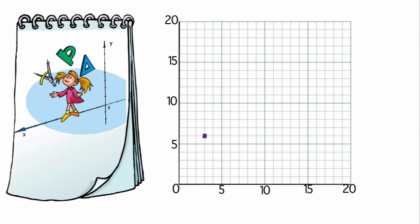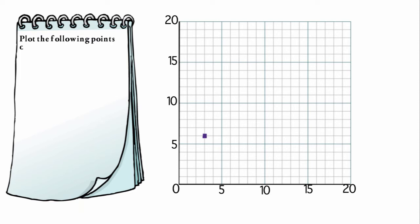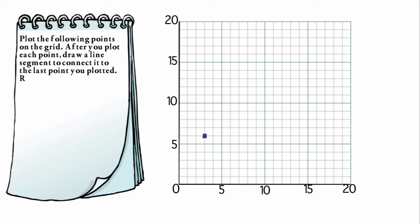Can you help me with this problem? For this problem, it asks us to plot the following points on the grid. After you plot each point, draw a line segment to connect it to the last point you plotted. For accuracy, we're reminded to use a straightedge.